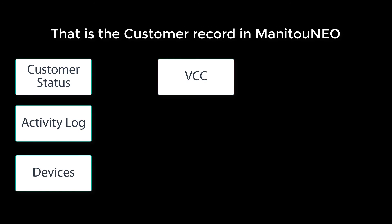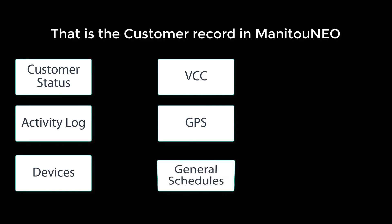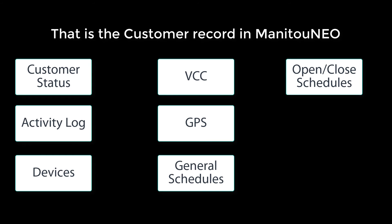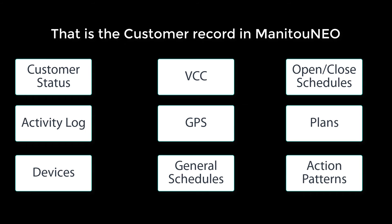So that's the customer record in a nutshell. The key changes to the customer record include: the customer status is always available and easy to understand; the customer activity log is now on the details form front and center with the ability to add comments; the system form is simpler to navigate; devices are more powerful with access to the Video Control Center and reference images; GPS tracking with BoldTrek geofencing is simpler; general schedules are now in line in many places and can be used in action patterns; open-close schedules are easier to read with new color coding; plans are cleaner and more streamlined; and action patterns are more powerful and easier for operators to understand.